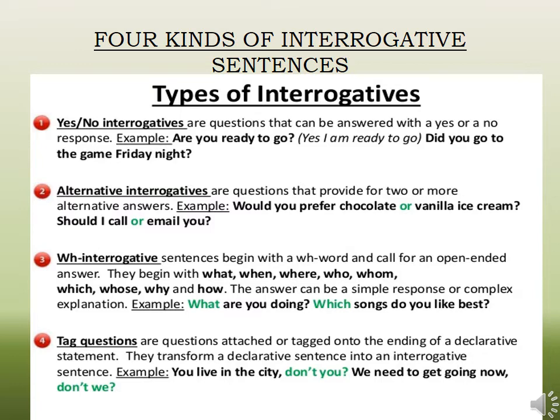The next type of interrogative sentence is WH interrogatives. These are question sentences that begin with WH words such as who, why, when, where, which, and how. For example, 'Who is your class teacher?' — the question starts with the WH word 'who.' Similarly, 'Which is your favorite color?' — the same concept applies, and a WH question is used here as well.